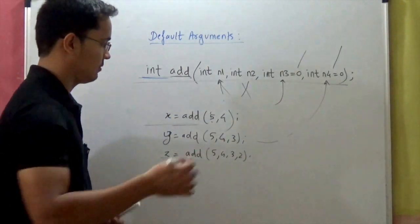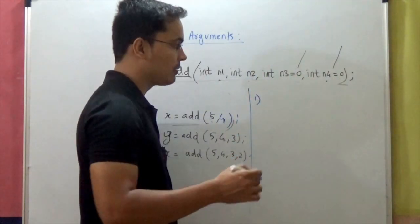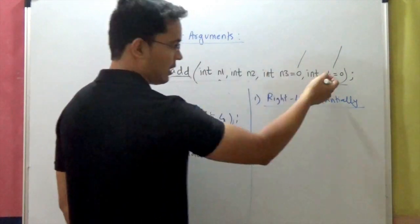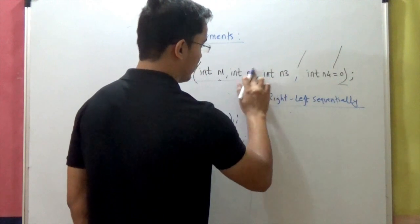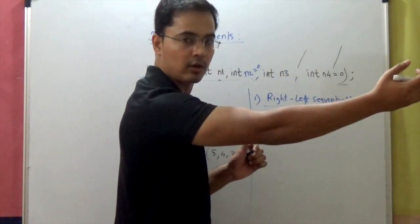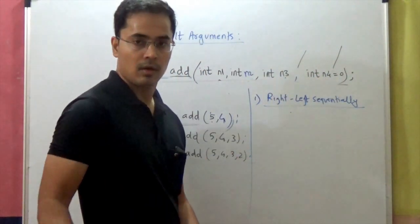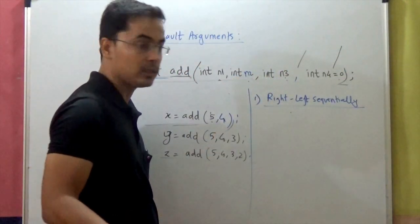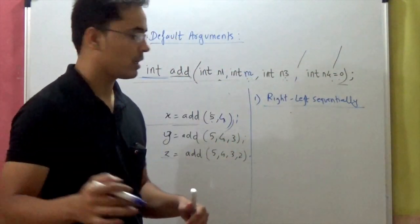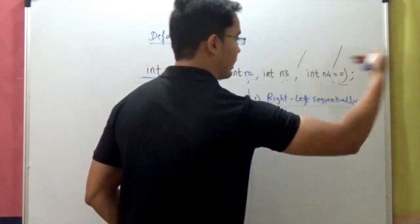There are some rules to use default arguments in C++. Rule number 1: your default arguments must be specified from right to left sequentially. That means you cannot have a situation where n4 is default, n3 is not default, and n2 is default — this is not allowed. All default arguments must be the trailing arguments in sequence. So you can make n4 default, or n4 and n3 default, or n4, n3, and n2 default, but there cannot be a break in the sequence from right to left.